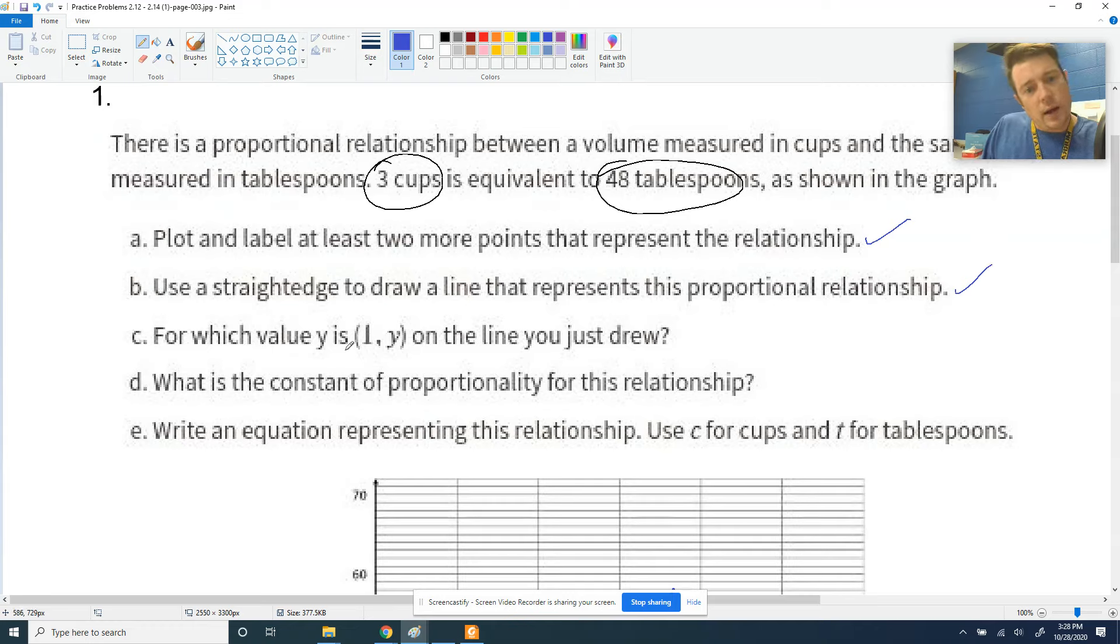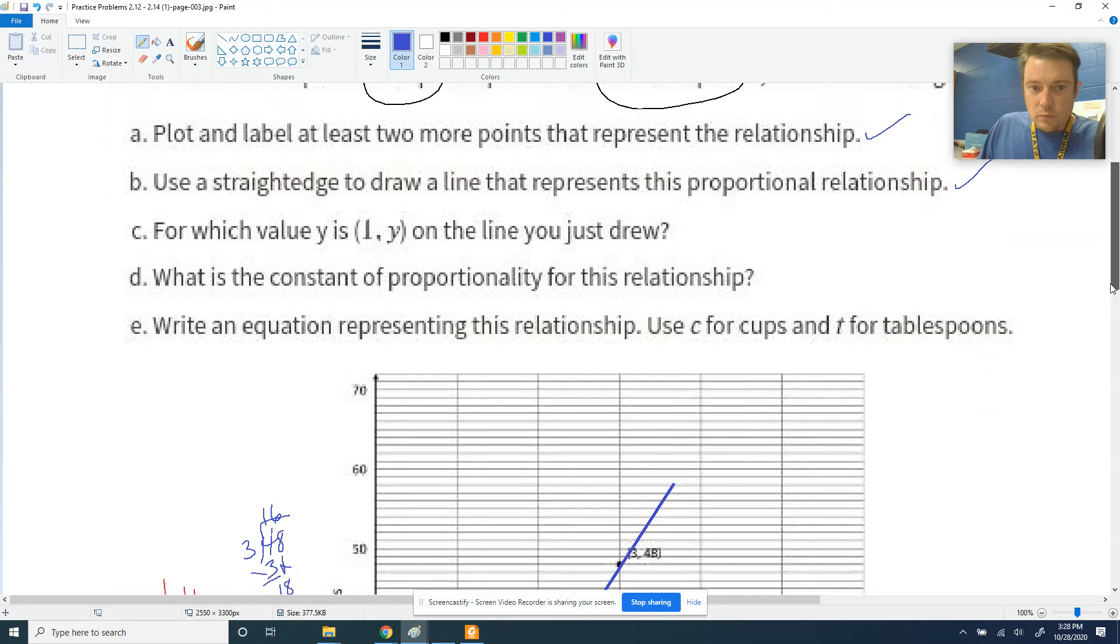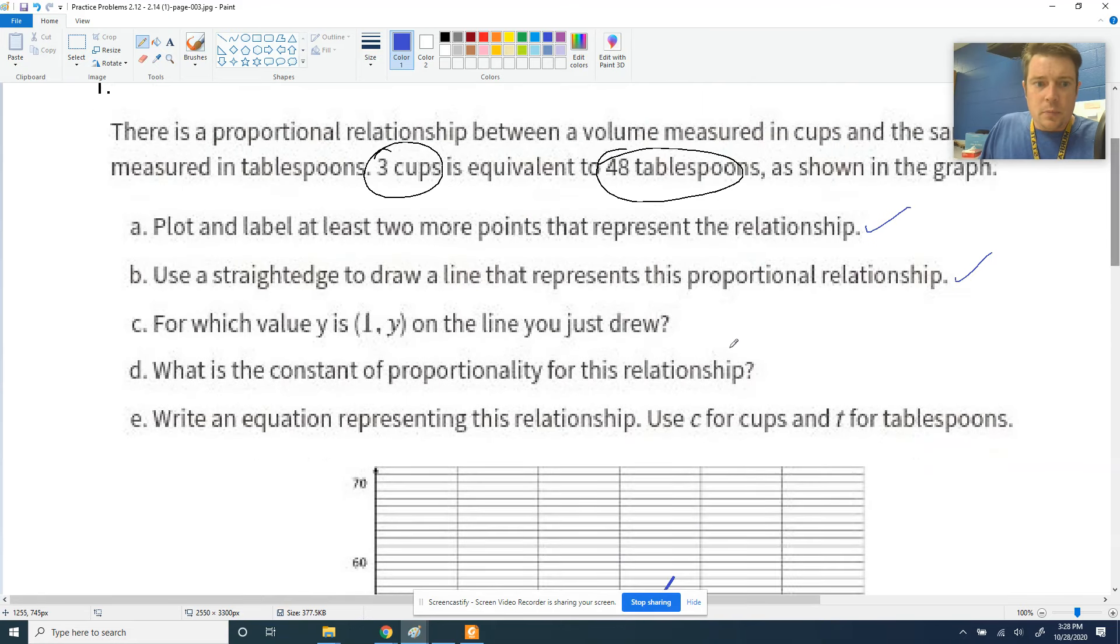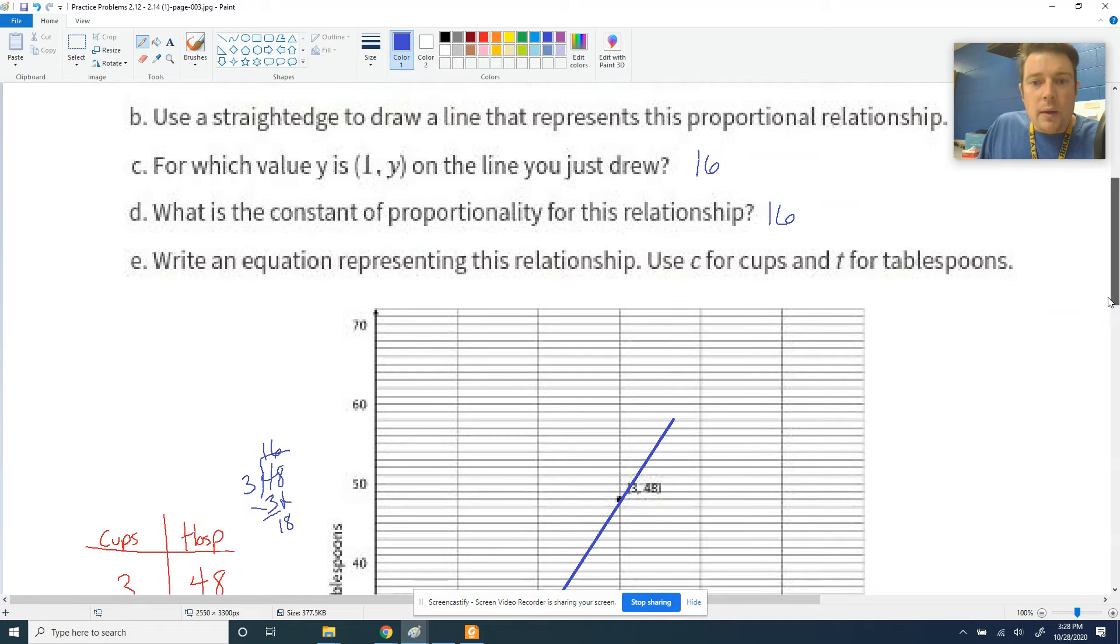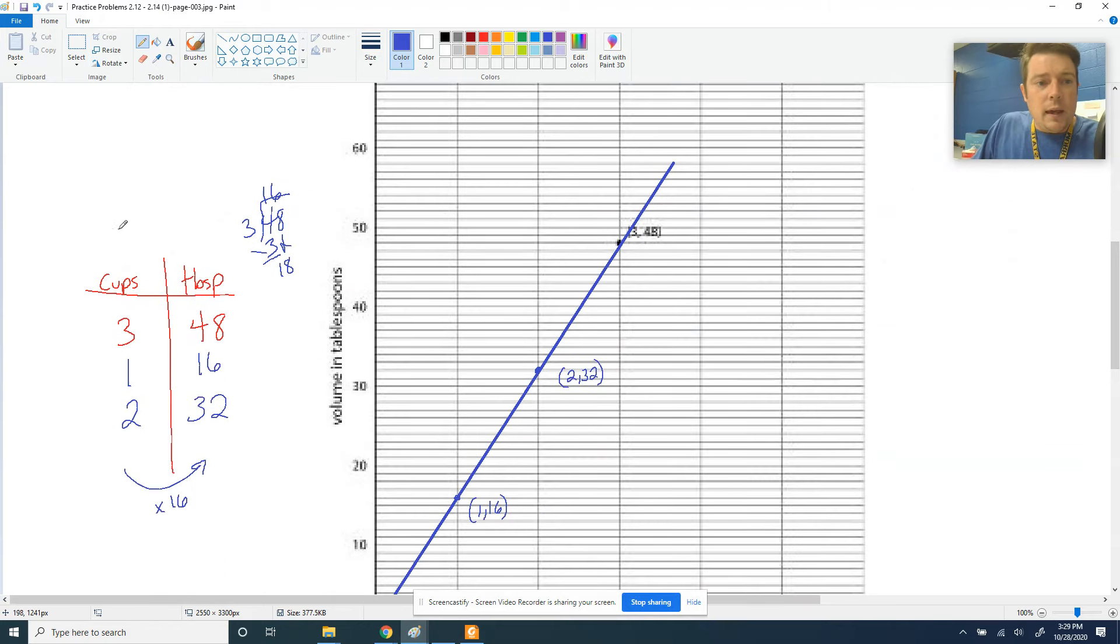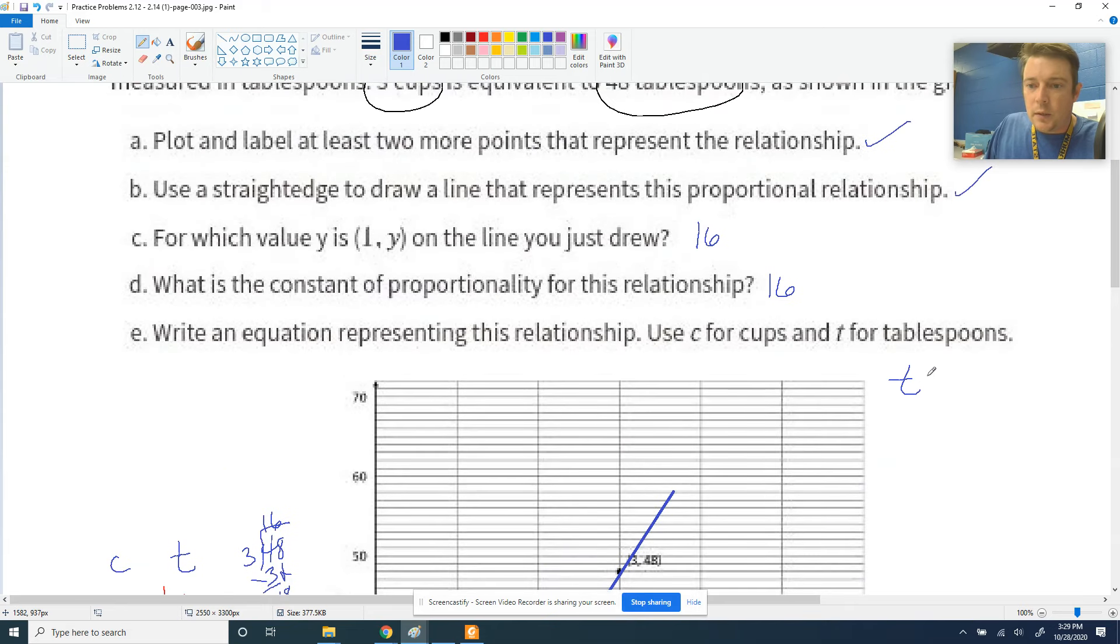For which value y is 1, y on the line you just drew? Well, we've already done that. When x is 1, y is 16. So we can write 16. What is the constant of proportionality for this relationship? It is that value because when x is 1, y is the constant. We've talked about that this week. And we've got to write an equation. If we've got the constant, that's pretty easy. We're going to use c for cups and t for tablespoons. So our equation would be multiply c times 16 to get t. And that would look like this: t equals 16c.